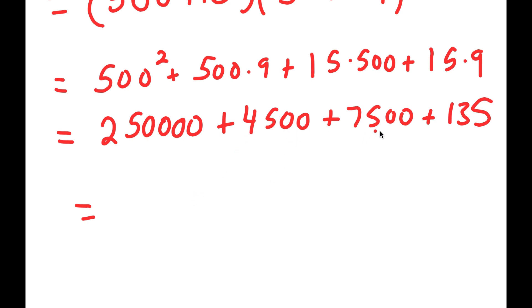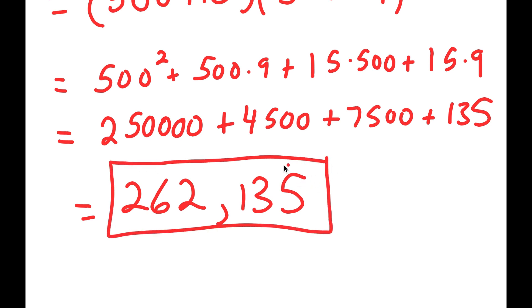Now, from here, 4,500 plus 7,500 is 12,000, so I get 250,000 plus 12,000, which is 262,000. And then at the end, I have 135, so I have 262,135. So this is my answer to this problem.